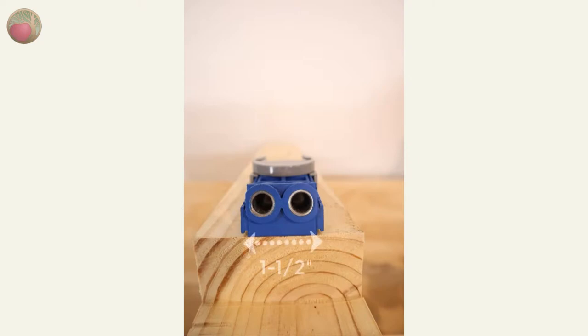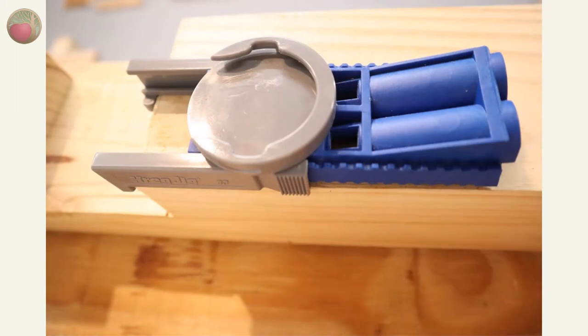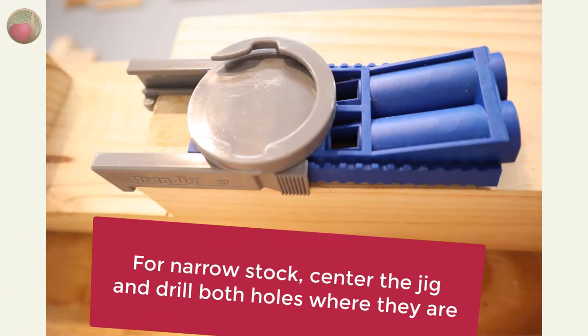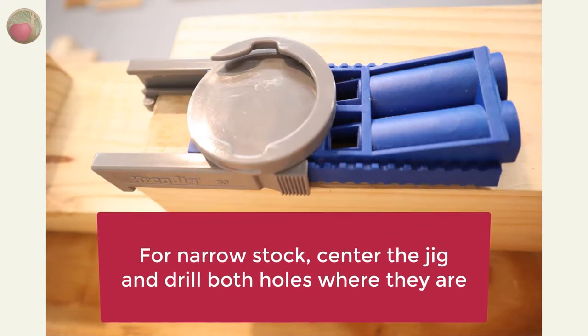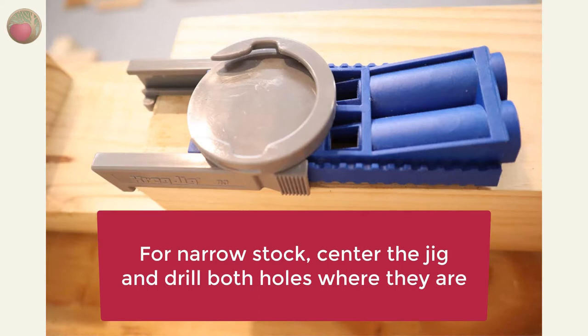As for position, the K3 jig is about one and one half inches wide. The manual says to position the hole no closer than nine sixteenths inch from the edge of the material. With the edge of the gray slider flush with the edge of the wood that puts the center of the nearest drill hole nine sixteenths of an inch from the edge of the wood. So if you're working on a narrow piece of stock you can drill holes side by side without moving the jig.